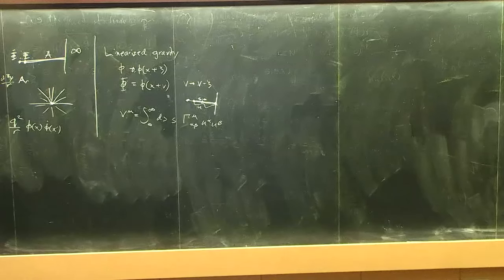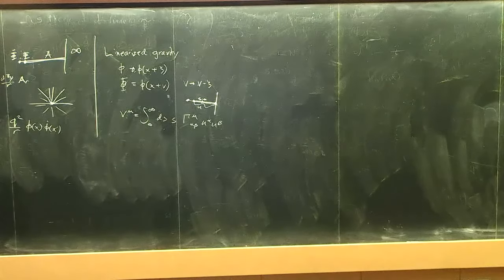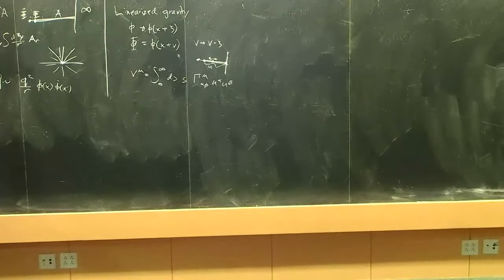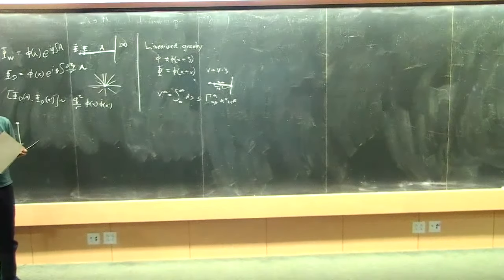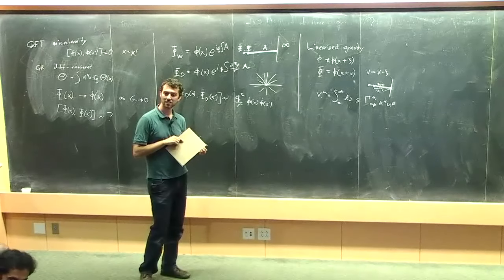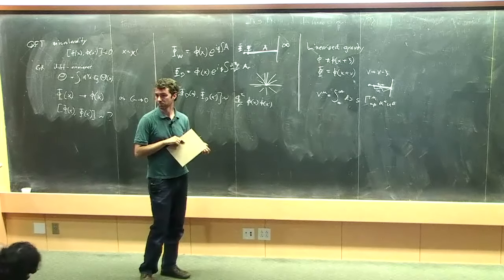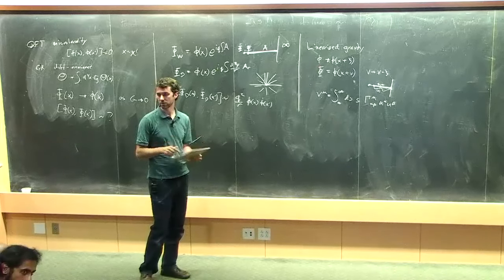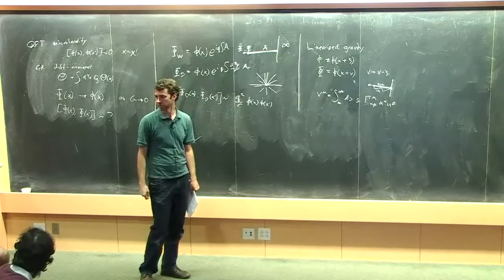The relationship to the gauge symmetry in ordinary gauge theory is noted: in gauge theory, the parameter x is not acted on by the gauge symmetry at all. In gravity, diffeomorphisms do act on the coordinates. At the linearized level, phi transforms as phi goes to phi plus C-mu del-mu phi. The construction works to leading order perturbatively in the coupling, with higher-order corrections expected.